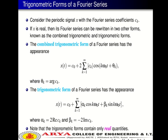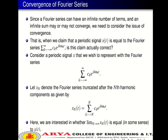Trigonometric forms of the Fourier series: If X is real, its Fourier series can be written in two other forms. The combined trigonometric form is X(t) = C₀ + 2 Σ(k=1 to ∞) |Cₖ| cos(kω₀t + θₖ), where θₖ = arg(Cₖ). The trigonometric form is X(t) = C₀ + Σ(k=1 to ∞) [αₖ cos(kω₀t) + βₖ sin(kω₀t)], where αₖ = 2 Re(Cₖ) and βₖ = −2 Im(Cₖ). Note that trigonometric forms contain only real quantities.